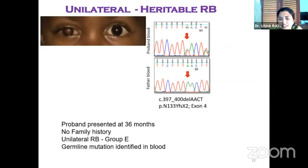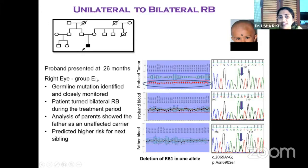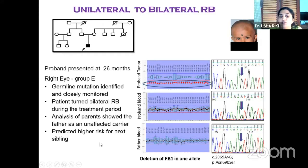The next scenario was a proband presenting at 36 months with no family history — unilateral RB group E — but germline mutation was identified in blood, so we know the offspring has to be careful. Another unilateral proband at 26 months with right eye group E tumor had a germline mutation identified and was closely monitored — it turned out to be bilateral retinoblastoma during the treatment period. Analysis showed the father was an unaffected carrier, predicting a higher risk for the next sibling.